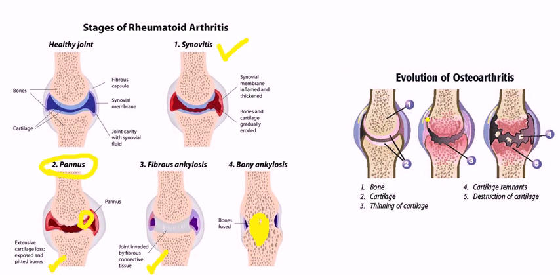In the evolution of osteoarthritis, there is initial bone involvement followed by thinning of cartilage, then cartilage remnants, and ultimately destruction of the cartilage.